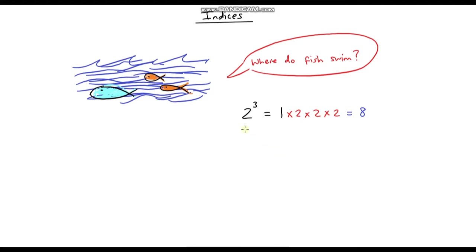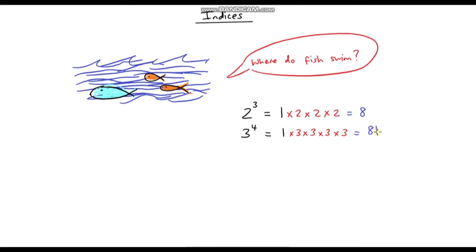Let's do another example. Let's say we've got 3 to the power of 4. We always start with 1, and this time we're going to multiply by 3 four times: 3 times 3 times 3 times 3. So: 1 times 3 is 3, times 3 is 9, times 3 is 27, and 27 times 3 is 81. So 3 to the power of 4 is 81.